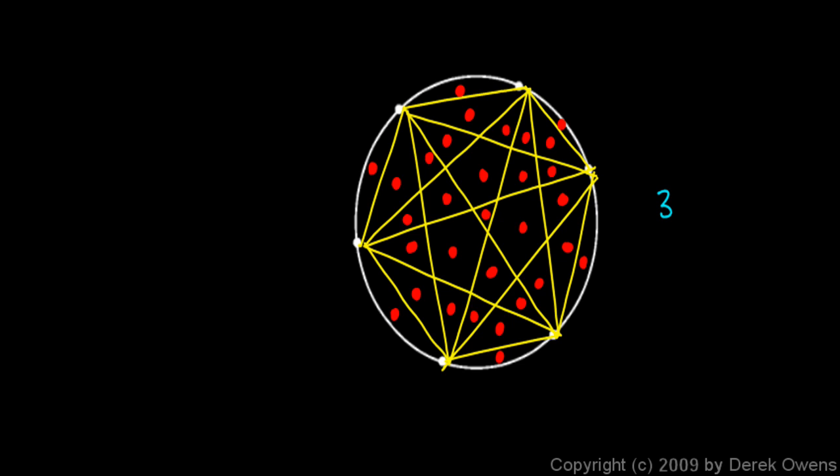We end up with 31 regions. And you can't do it any differently. You can't get 32. Even if you take these points on the corner and move them around in different ways so that these lines change position slightly, you can't slice this up into more than 31 regions.